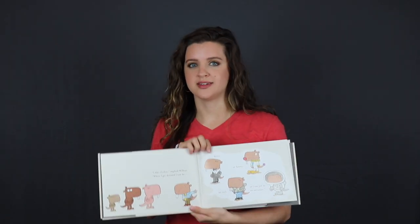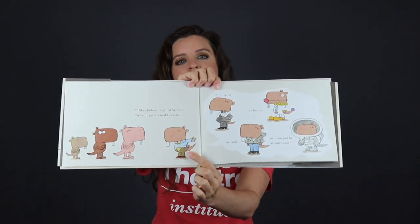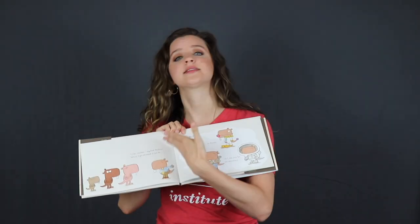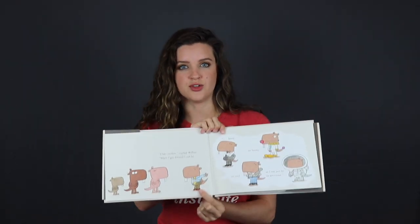In your digital lesson, discuss the beginning, middle, and end of the book. Can your students create statues with their bodies to represent the different parts of the story? Give them a three, two, one, freeze to get into their statues and then an unfreeze so they can relax. For example, if I was going to create a statue for the beginning of the book, I'm going to choose this moment where Wilbur is saying, 'I like clothes. When I get dressed, I can be all these things.' So I'm going to recreate this statue as my beginning of the story statue. Three, two, one, freeze.